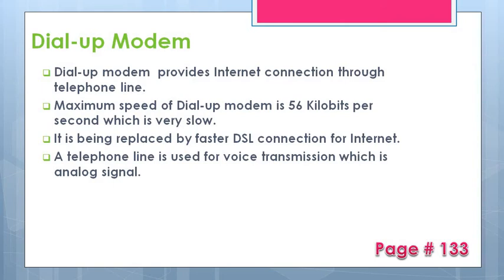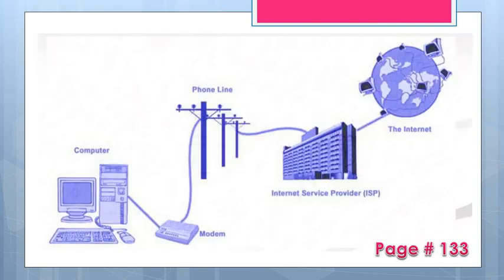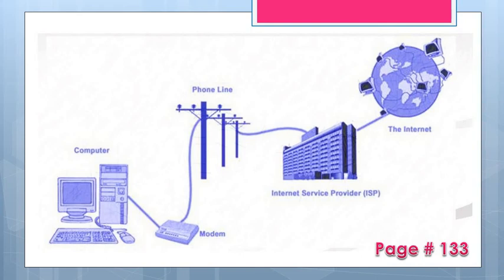A telephone line is used for voice transmission, which carries analog signals. In the past, before DSL, people used the internet through a modem connected to telephone lines via an internet service provider. The telephone lines carry analog signals, but the computer uses digital signals. So the modem converts those analog signals from the phone line into digital signals that the computer can use.